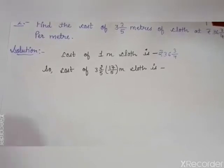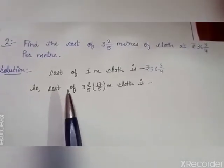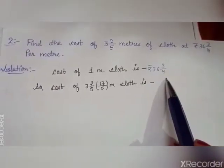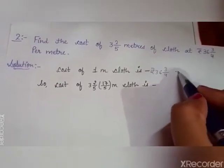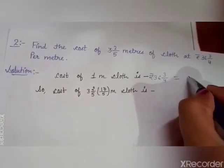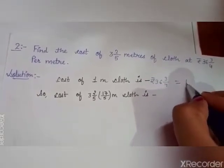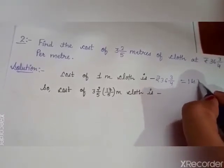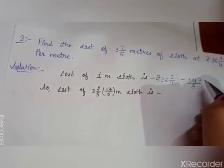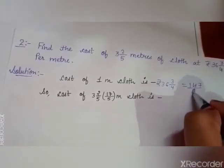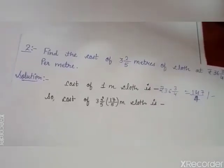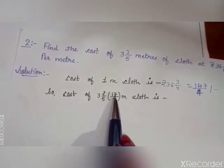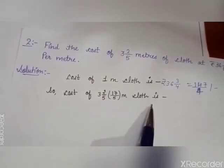So, firstly we write what is given. Given that cost of 1 meter of cloth is Rs. 36 whole 3 by 4. Convert it into a fraction: 36 into 4 is 144, and 144 plus 3 is 147 by 4 rupees. And what is the cost of 3 whole 2 by 5, that is 17 by 5 meter of cloth?